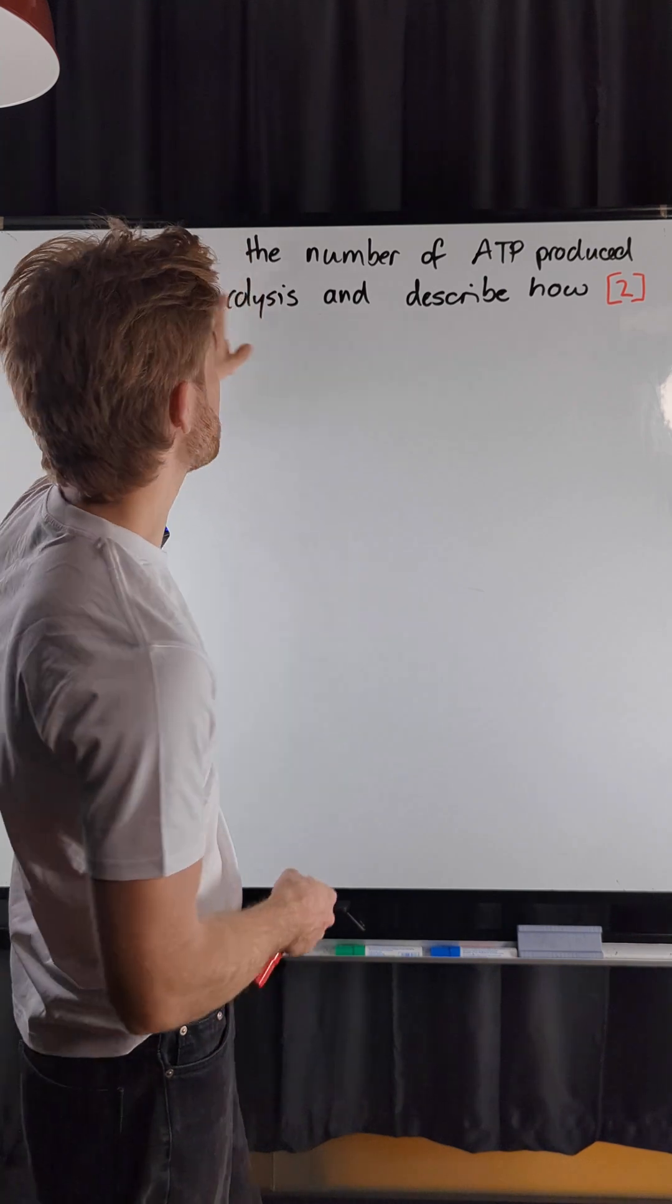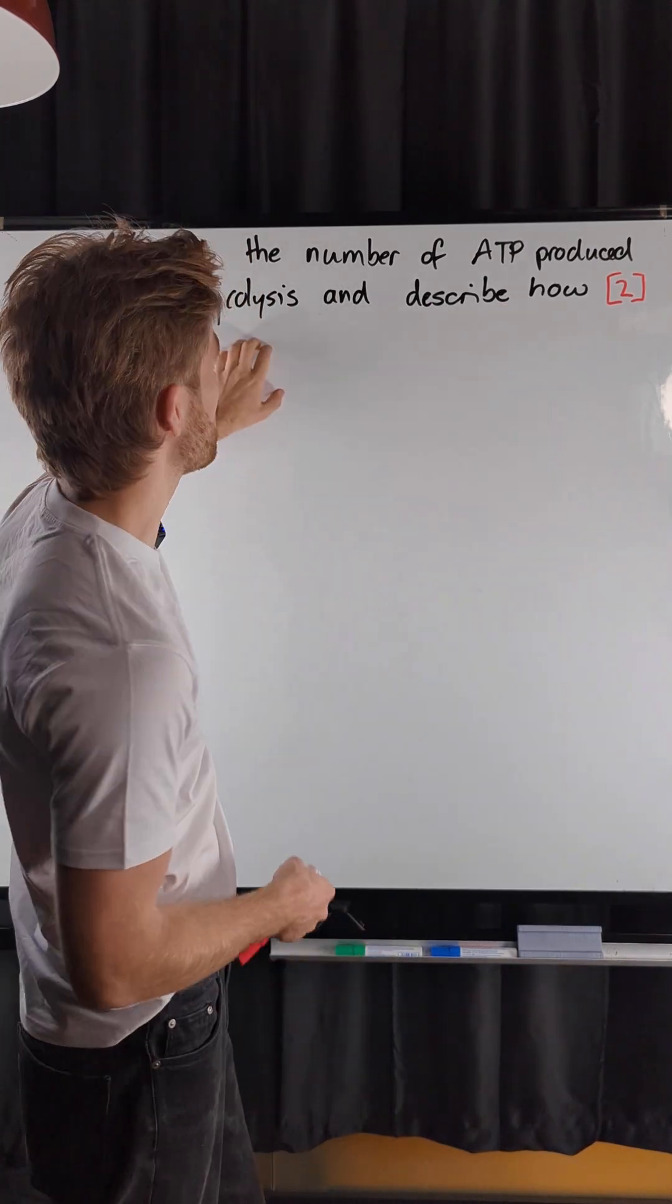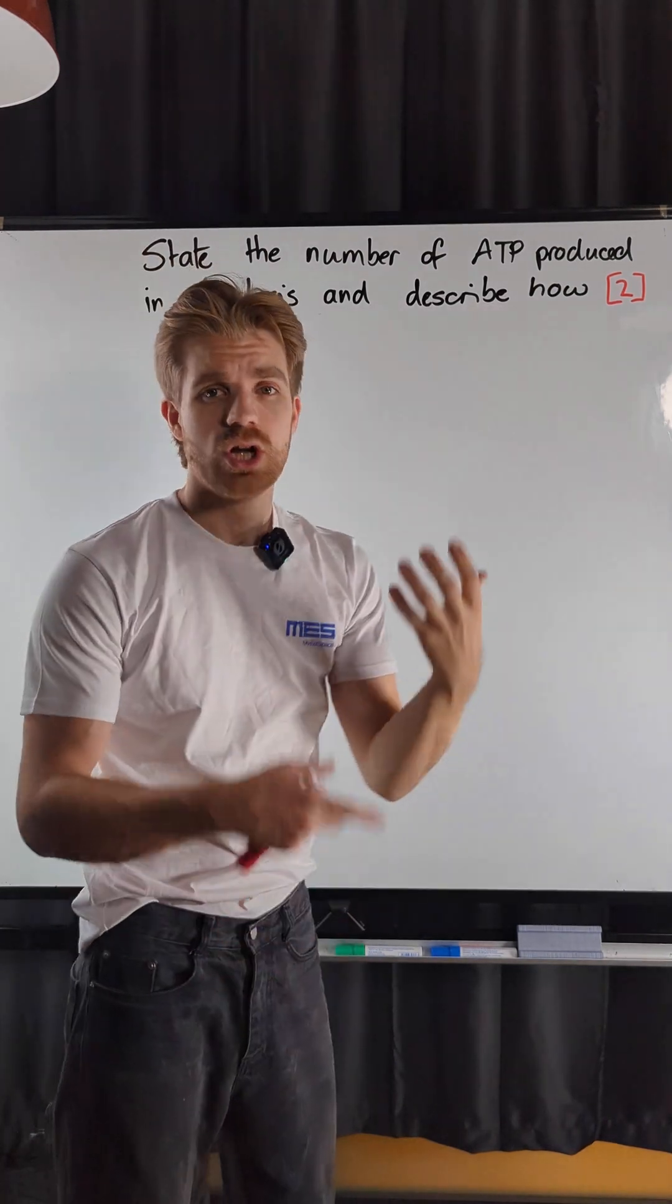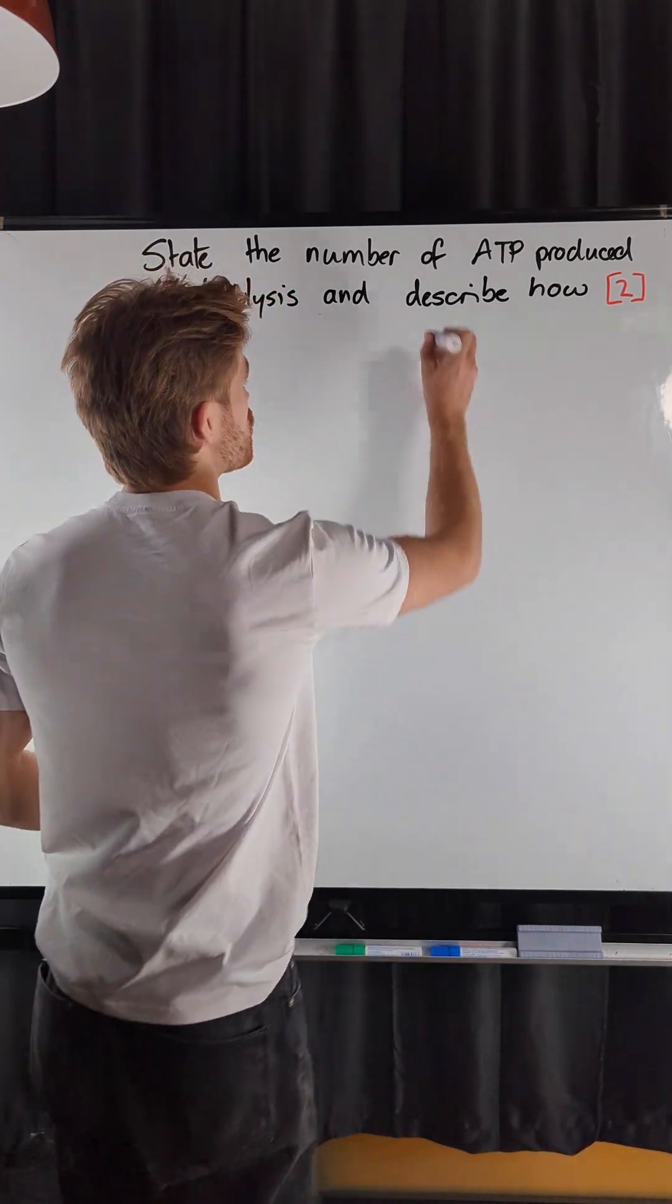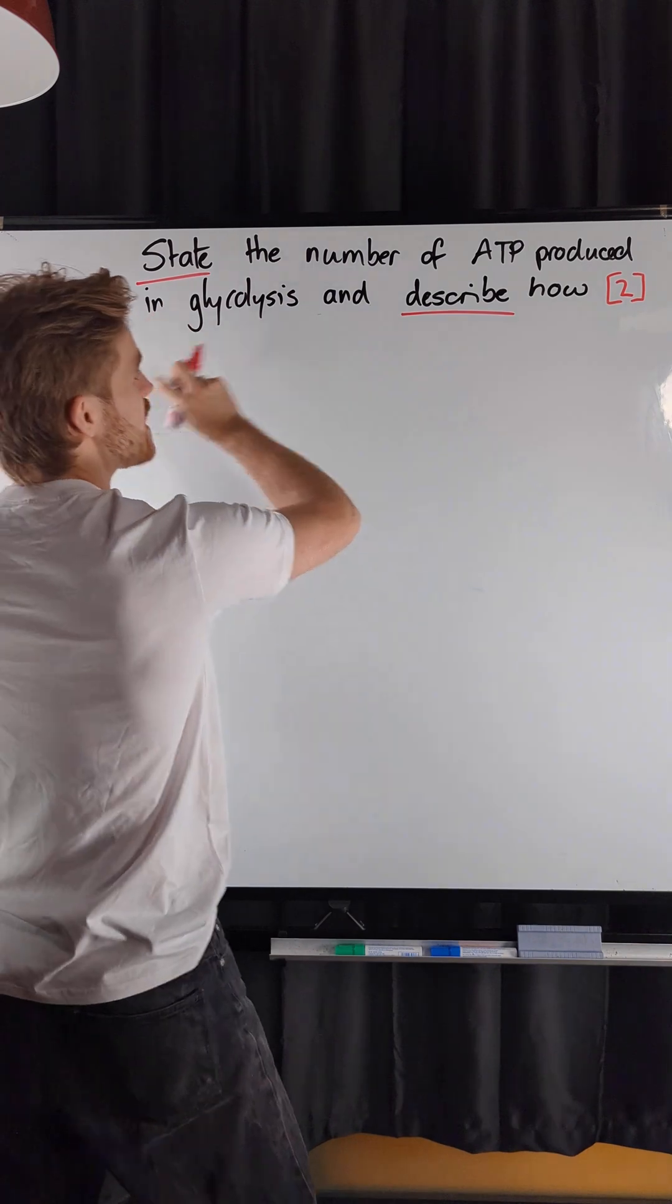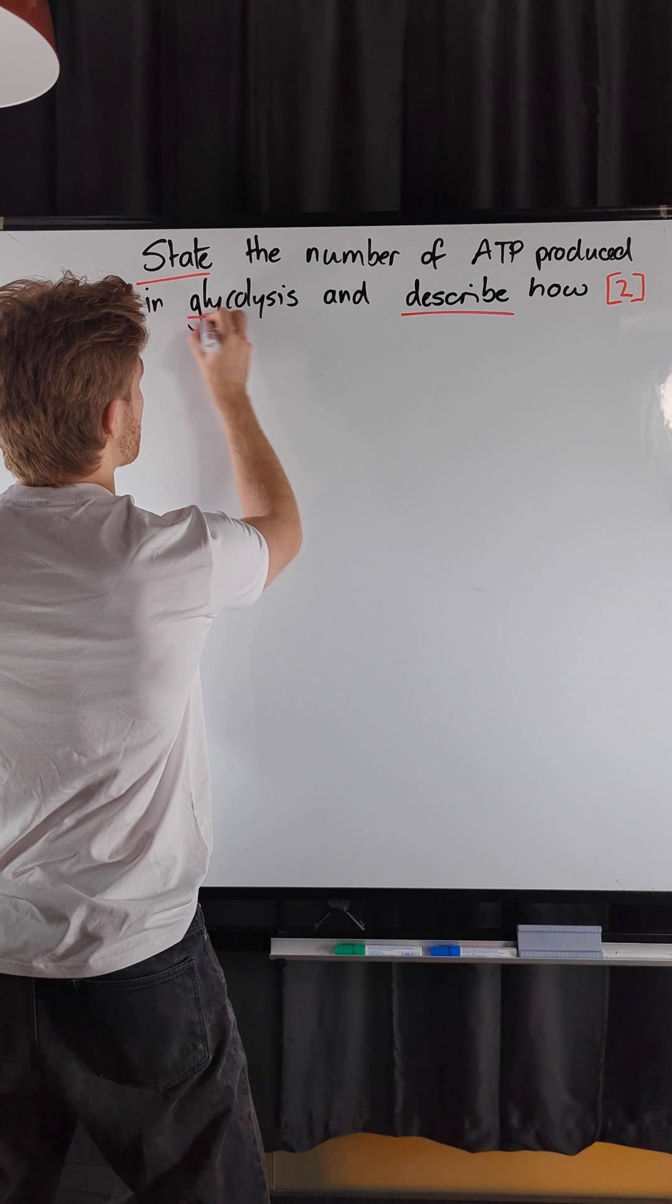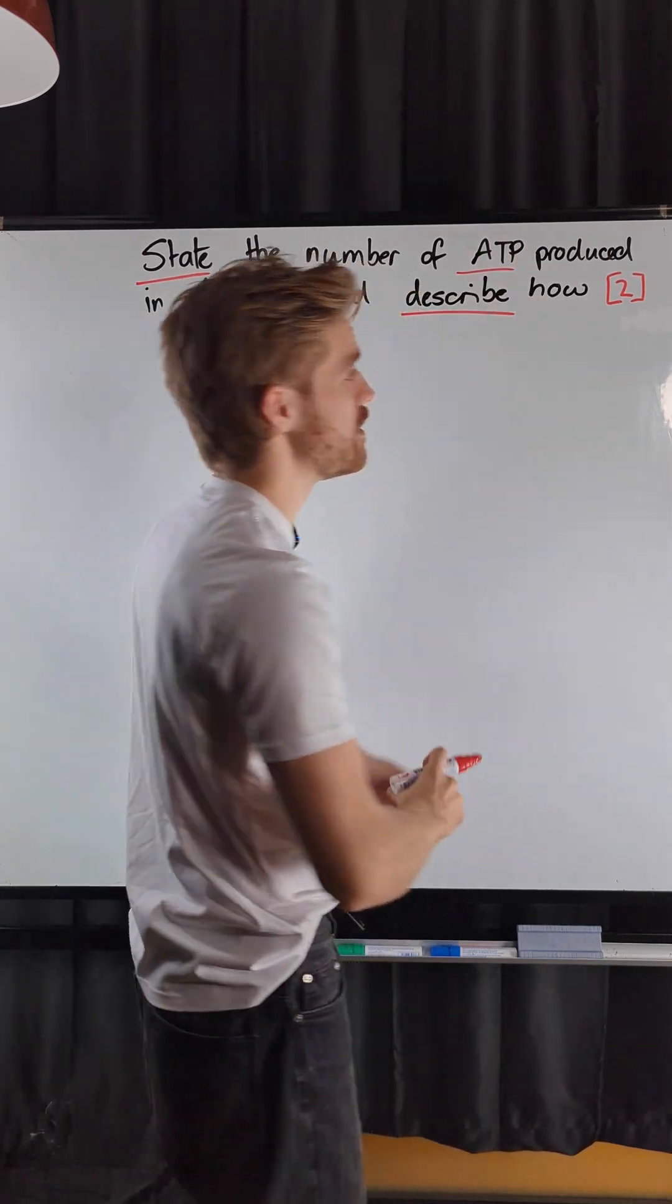The question says, state the number of ATP produced in glycolysis and describe how. Immediately I recognize that we've got two command words here: state and describe. We know we're talking about glycolysis and we're talking about ATP.